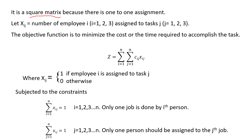Let xij equal the number of units of tasks assigned, where i (1, 2, 3, ...) represents employees and j represents tasks. There is a single employee assigned to a single task. The objective function is to minimize the cost or time required to accomplish the tasks.